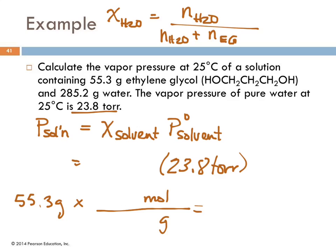The molar mass of ethylene glycol comes out to 76.09 g/mol. Dividing 55.3 grams by 76.09 gives 0.7267 moles of ethylene glycol.